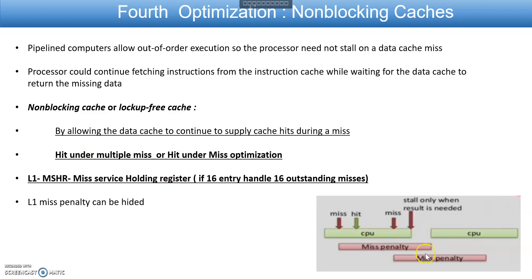To track multiple outstanding misses, L1 has a special register called MSHR (Miss Status Holding Register) — a kind of bookkeeping structure. If it has 16 entries, it can handle 16 outstanding misses. Because of non-blocking caches, L1 miss penalty can be hidden: while misses are in progress, hits can still be serviced, thereby improving cache bandwidth.